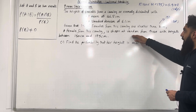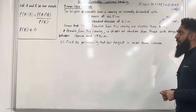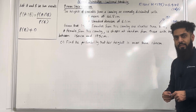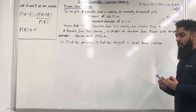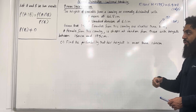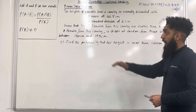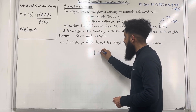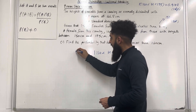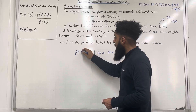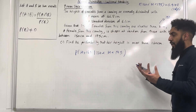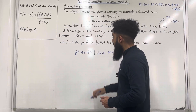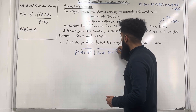A female from this country is chosen at random from those with heights between 150 cm and 175 cm. Part C: find the probability that her height is more than 160 cm. We have a population of females and we're studying the height. We're going to restrict the population to females with height between 150 cm and 175 cm. Given that we're looking at females with a height between 150 and 175, we want to work out the probability that the height is greater than 160. So we have a conditional probability, and we're going to rewrite it using the conditional probability formula. We can treat H > 160 as event A and 150 < H < 175 as event B.